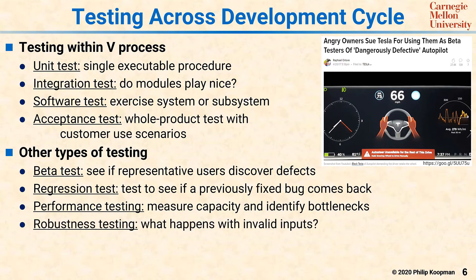Robustness testing has to do with what happens when you get invalid inputs to the system. While the invalid inputs might result in undefined behavior, generally it's a bad idea if that undefined behavior causes an entire system crash or some dangerous output. So typically with robustness testing, you see some exceptional inputs being put in, and the Oracle is something straightforward, such as the system doesn't crash, the system doesn't hang, or the system does not violate its safety requirements.